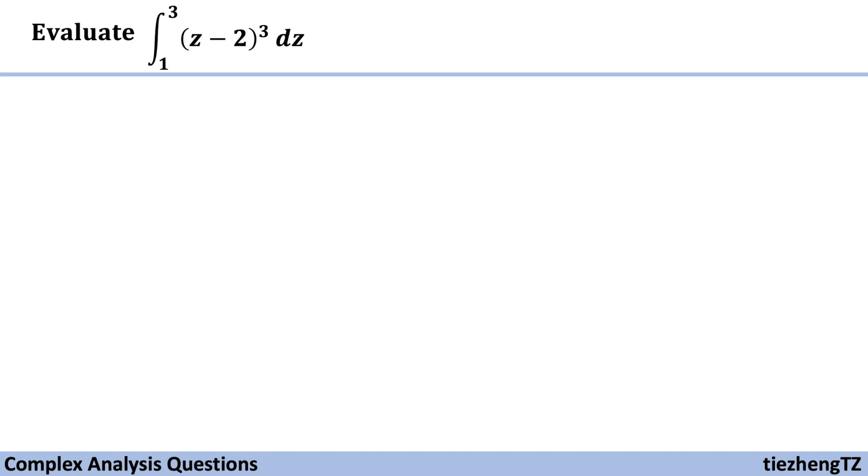Similar to the two examples in the previous videos, first, we just need to find the antiderivative of z minus 2 to the power of 3, and then substitute using the integral limits, and then we just do the math.